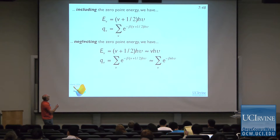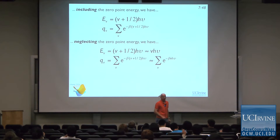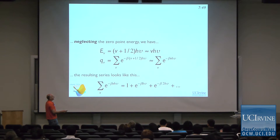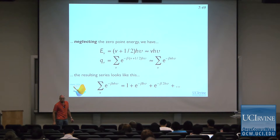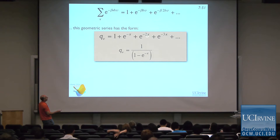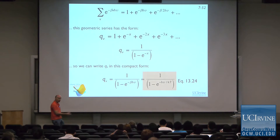To make things simpler, we often neglect the zero point energy. Later, if we calculate the energy using the equations I'll show you, we can always add the zero point energy back in at the end — we know what it is. So if we neglect the zero point energy, the one-half goes away and we get a simplified expression. Writing that series out for v = 0, 1, 2, 3, and so on, there's a nice closed-form expression: the series sums to 1/(1 − e^(−hν/kT)). So substituting hν/kT gives our vibrational partition function — a really simple expression.